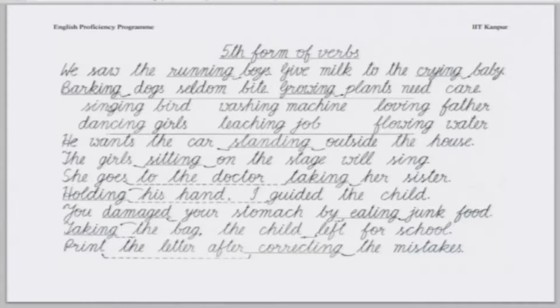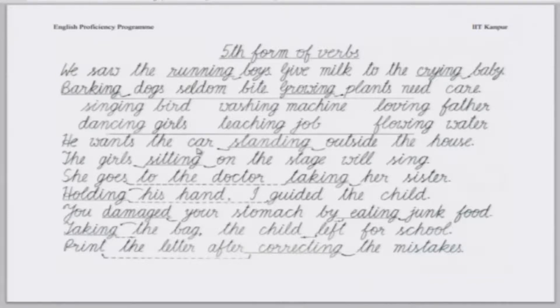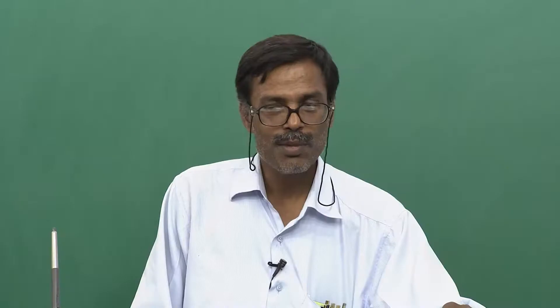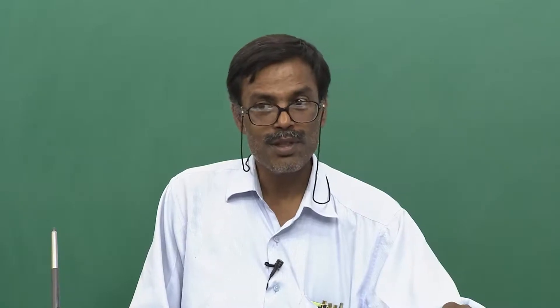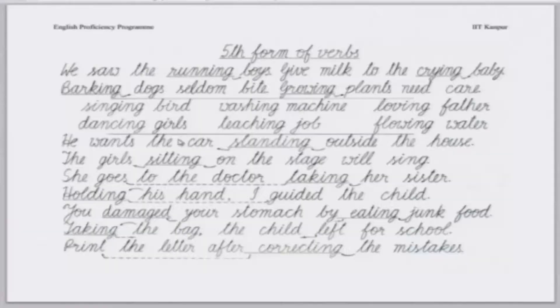Similarly, you can use these kinds of things in your sentences: singing bird, washing machine, loving father, flowing water, teaching job, dancing girls. Now, see some examples in which the fifth form will be put after the noun which it is qualifying.